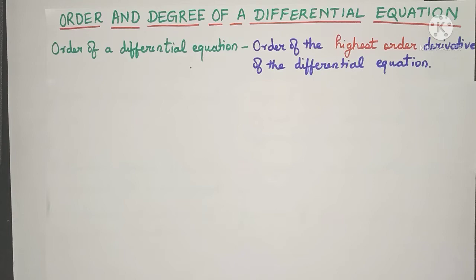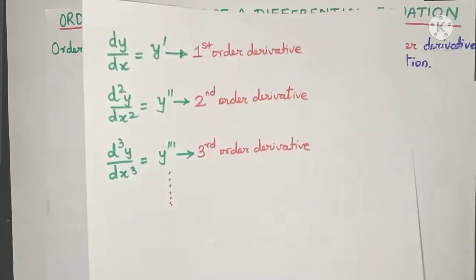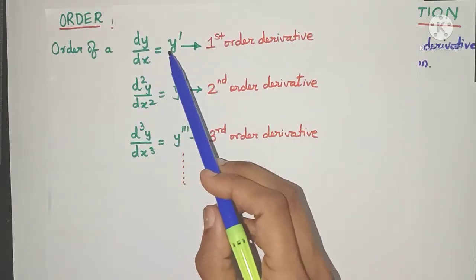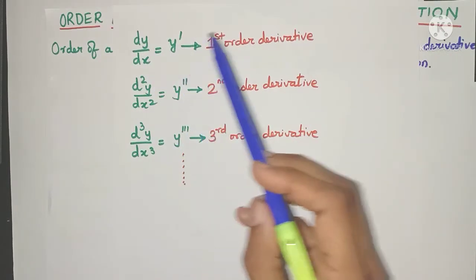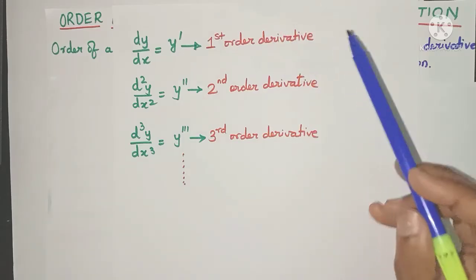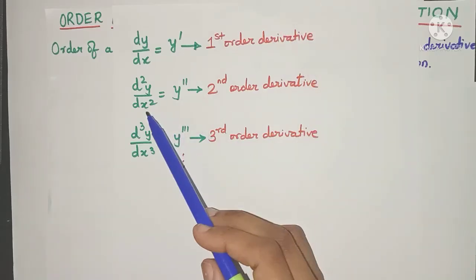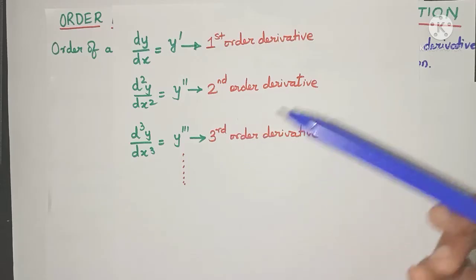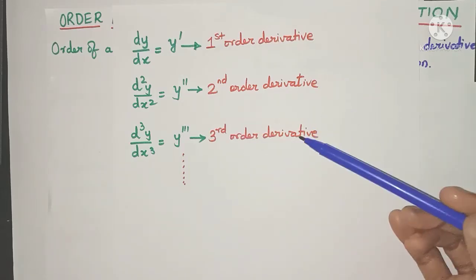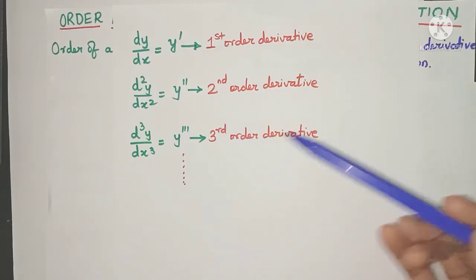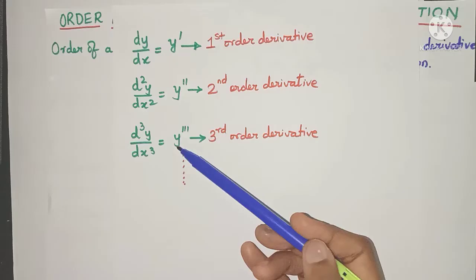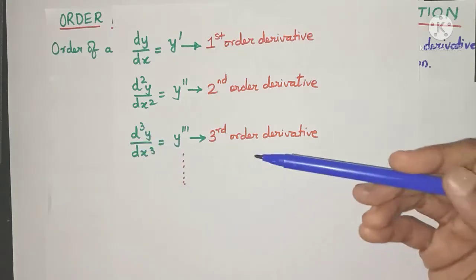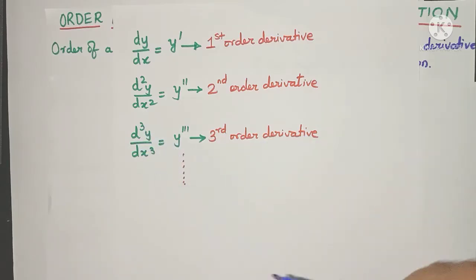If you recall, dy/dx or y' is the first order derivative; d²y/dx² or y'' is the second order derivative; the third order derivative is denoted by y''' which is d³y/dx³, and this continues.